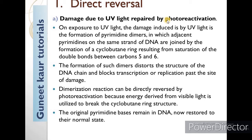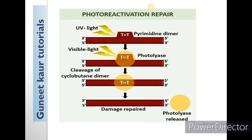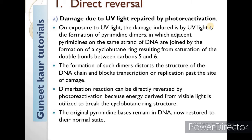We can see this through a diagram. When DNA is exposed to UV light, there are pyrimidines that become pyrimidine dimers. The damage induced by UV light is the formation of pyrimidine dimers, in which adjacent pyrimidines on the same strand are joined by the formation of a cyclobutane ring. There is a cyclobutane ring.